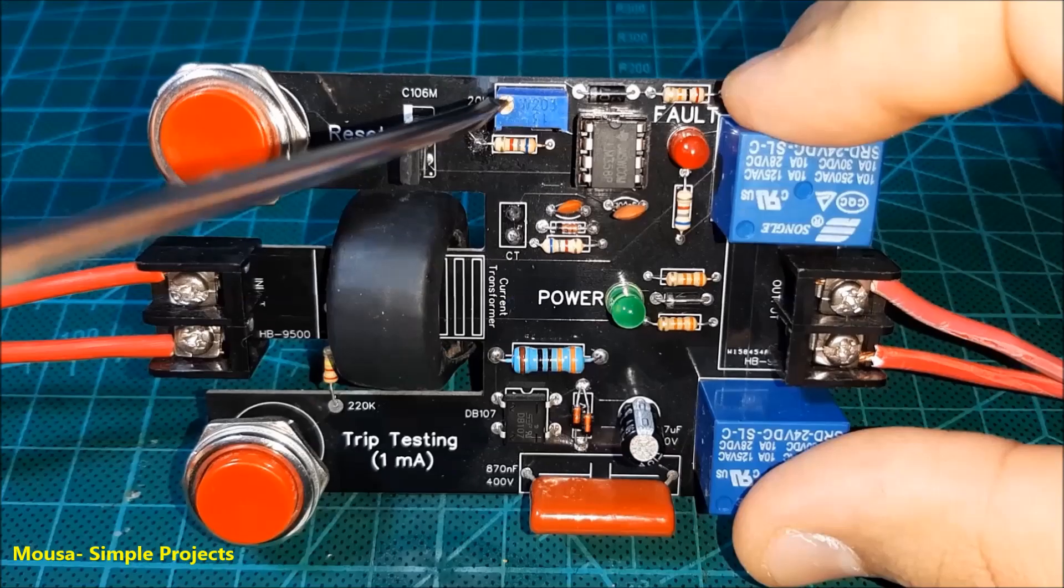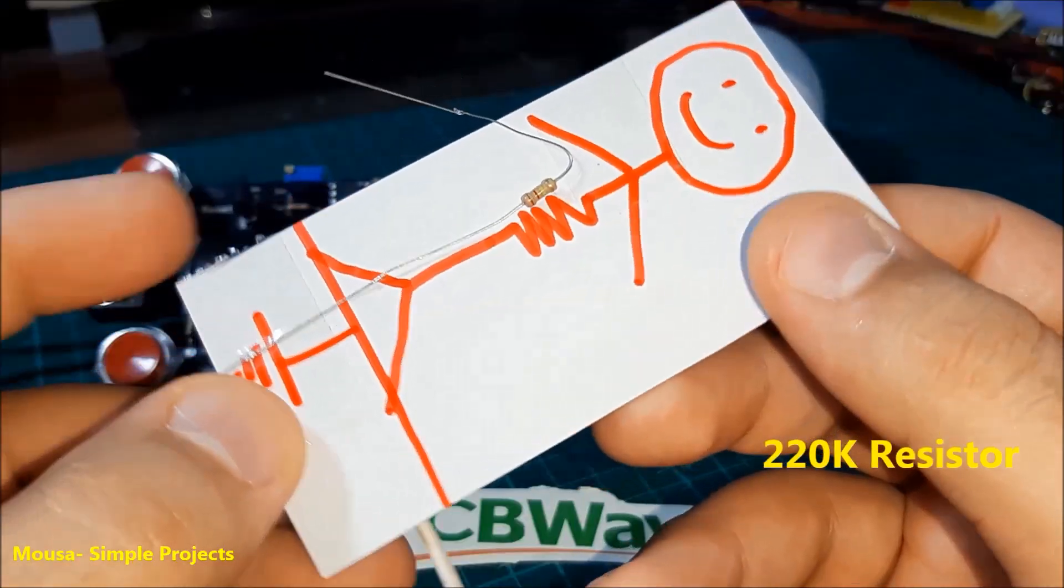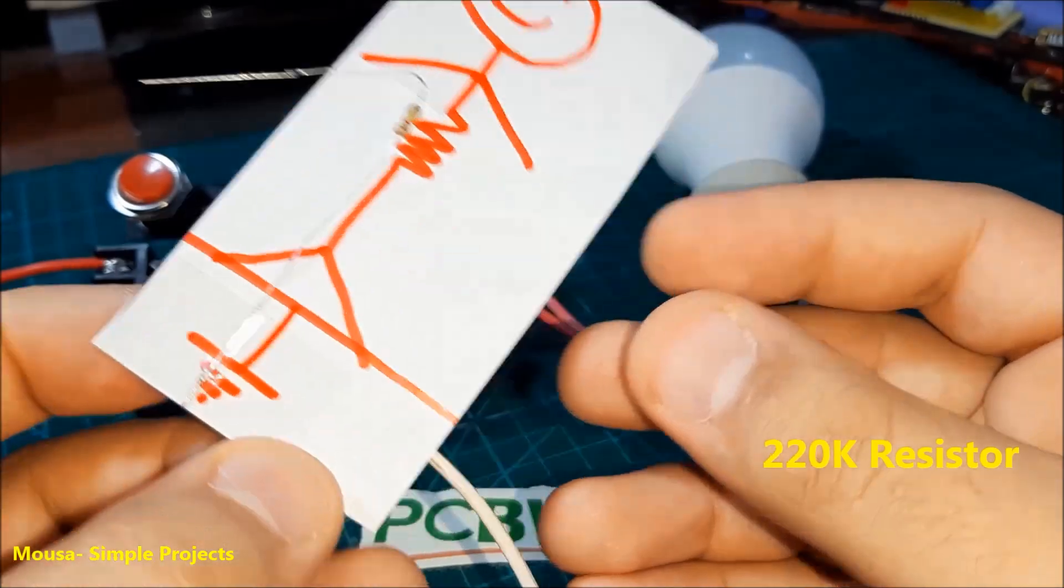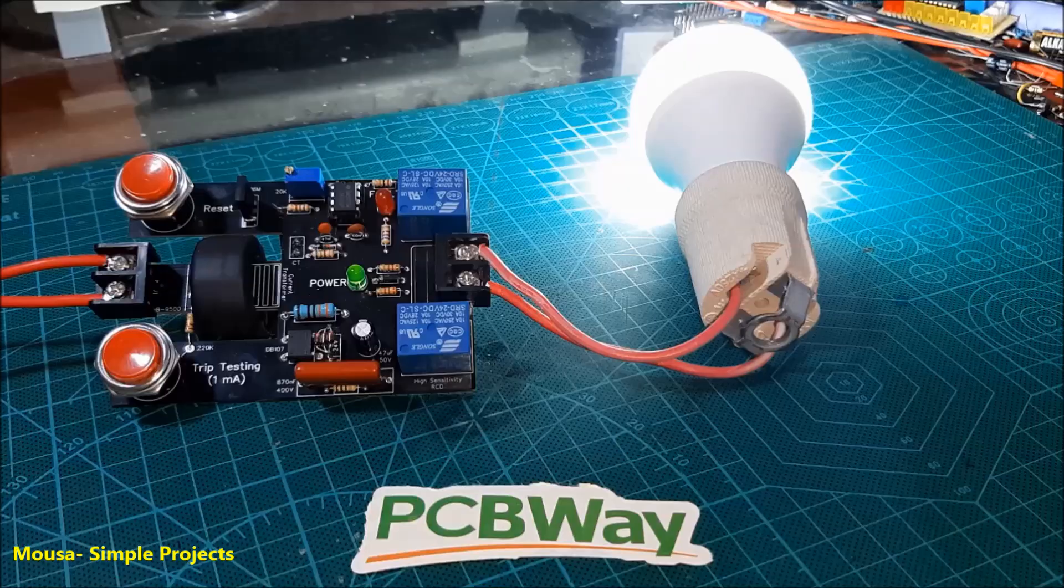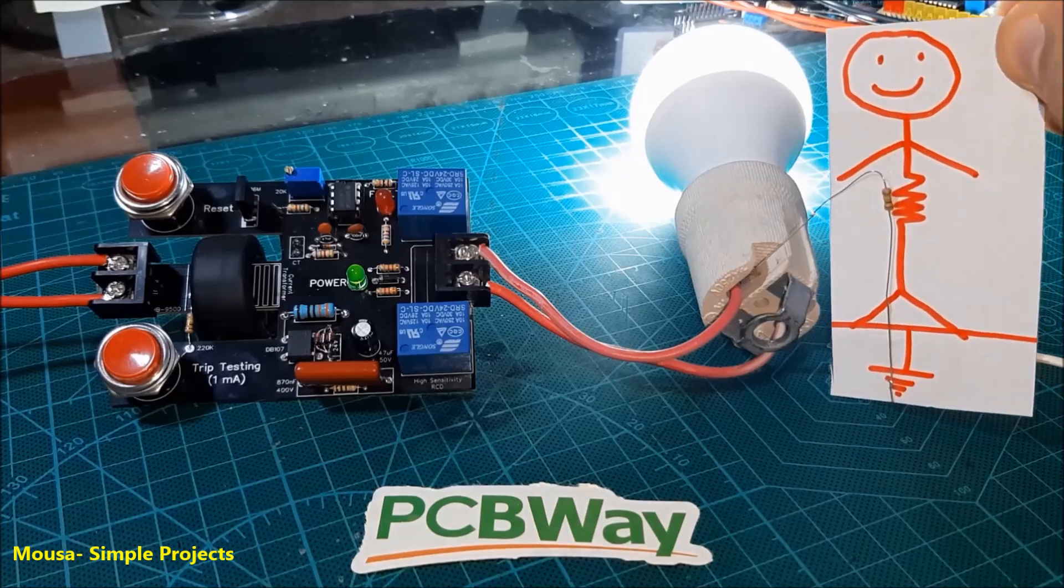This resistor stuck to the paper simulates the human body when it gets shocked. It's connected to the earth pin. When somebody gets shocked, this circuit disconnects the mains voltage immediately and protects their life.